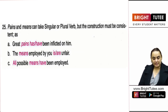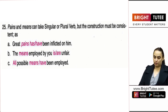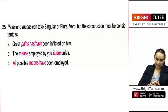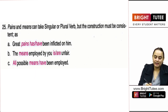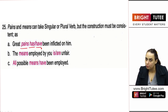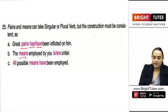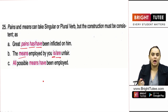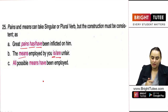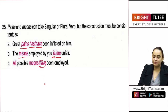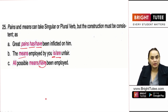The next rule says 'pains' and 'means' can take singular or plural verb, but the construction of the sentence has to be consistent. For example: 'means employed by you is unfair' or 'are unfair' — both are okay. 'All possible means have been employed' or 'has been employed' — both are acceptable depending on the sentence.